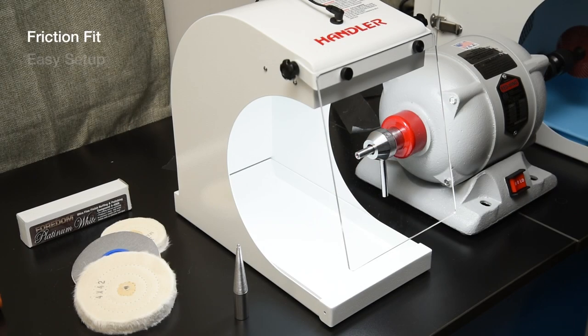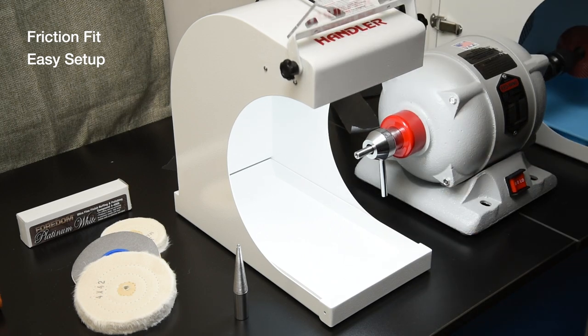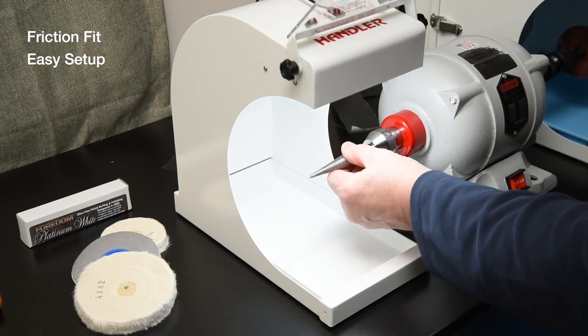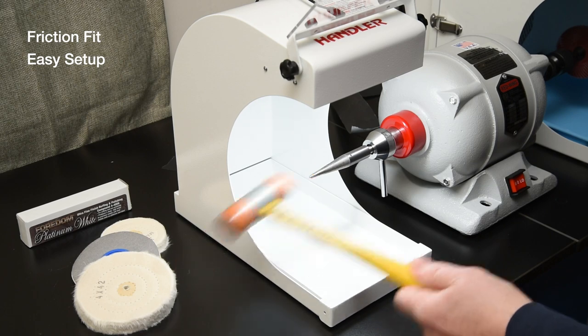Attachments are friction fit and easy to set up. To install attachments on the left side, make sure the lathe is off. Place the 7L spindle on the left side shaft and tap lightly.